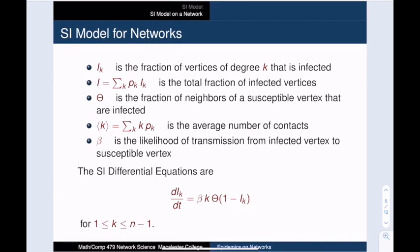So now let's adapt this model to be aware of the vertex degrees. In the previous model, we used the average degree as a stand-in for every vertex. Now we will split the population according to degree. We let i sub k denote the fraction of degree k vertices that are infected. So i sub k is some number between 0 and 1. We get the total fraction of infected vertices by taking the weighted sum of the i sub k's. We multiply p sub k times i sub k to get the fraction of population that is infected and has degree k.